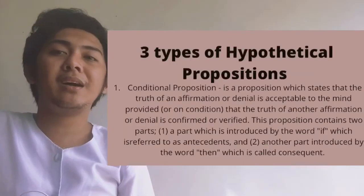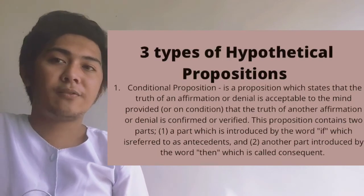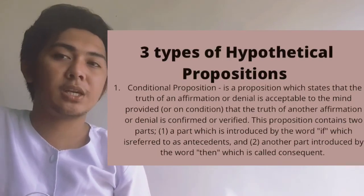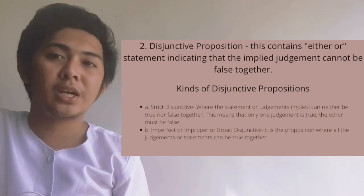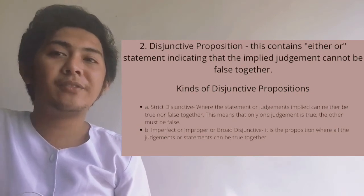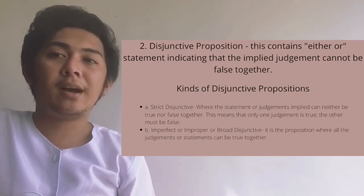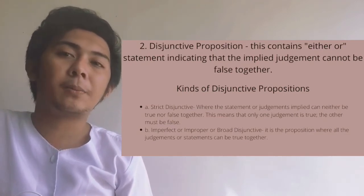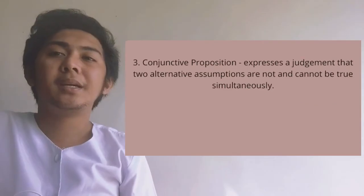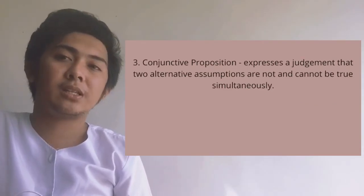We have the three types of hypothetical propositions. First, the conditional proposition. Second, the disjunctive proposition — which has kinds: the strict disjunctive, and the imperfect, improper, or broad disjunctive. Third, we have the conjunctive proposition.